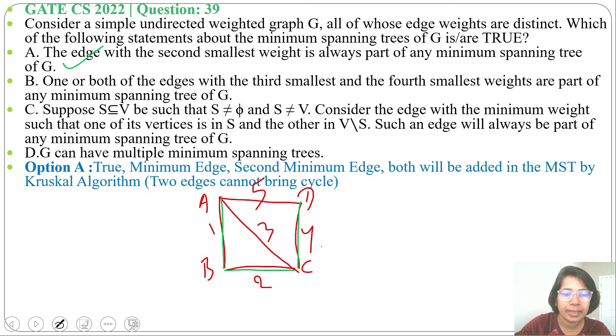So option A is true. Next, option B: one or both of the edges with the third smallest and the fourth smallest weight are part of the minimum spanning tree of G. This is also true. Here, mark, we skip 3 and we include 4, so 3 is the third smallest weight, 4 is the fourth smallest weight. One or both.